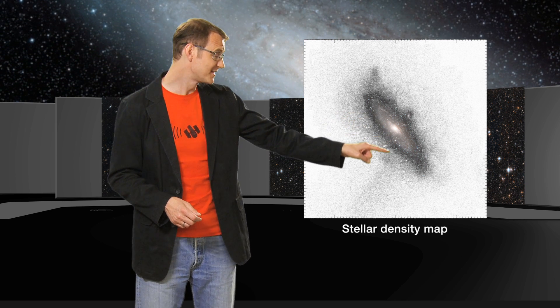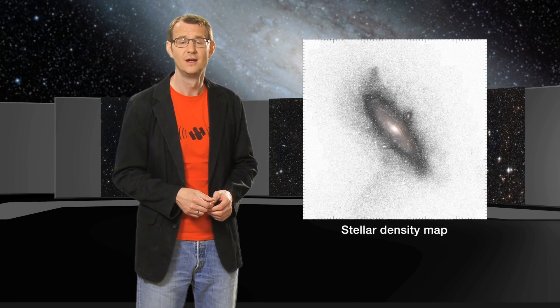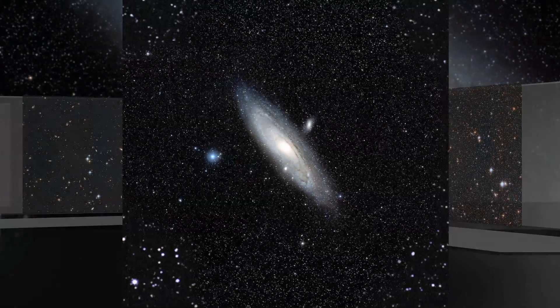This giant stellar stream is noted to be denser than the rest of the halo. This swathe of stars was left behind by a dwarf galaxy that was swallowed by Andromeda.